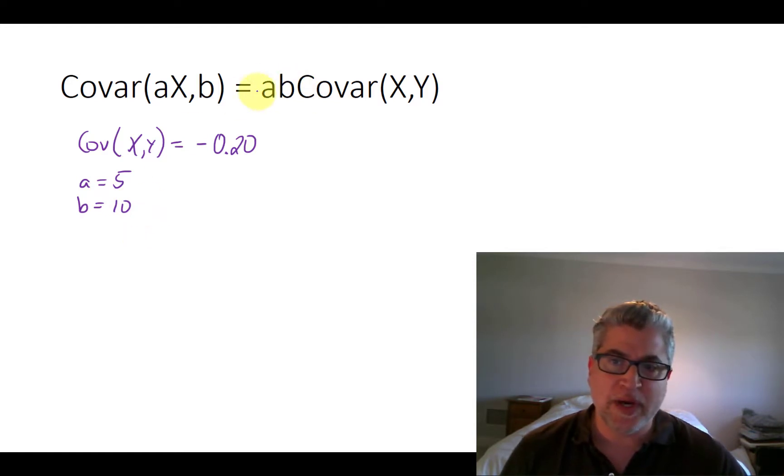Then what is the covariance of, rather than having Apple, five IBM and 10 apples.